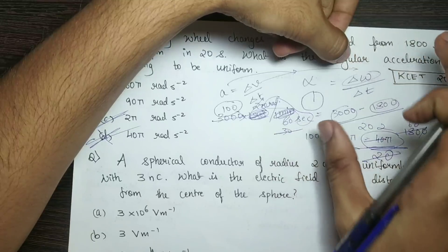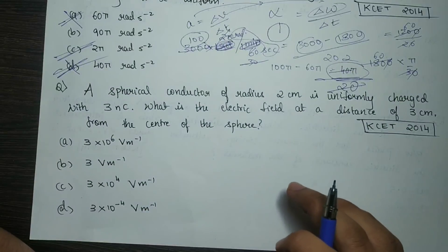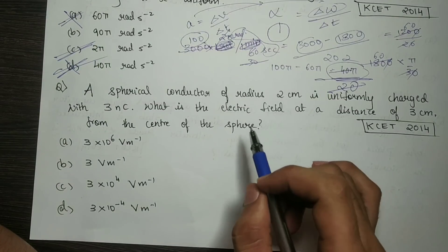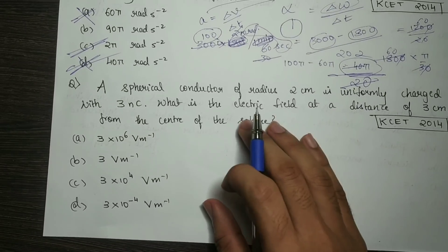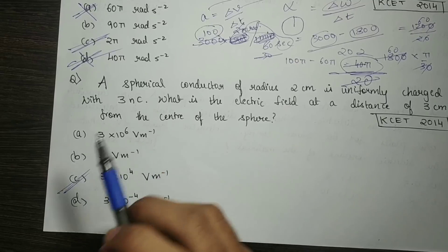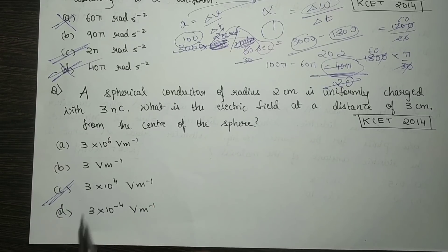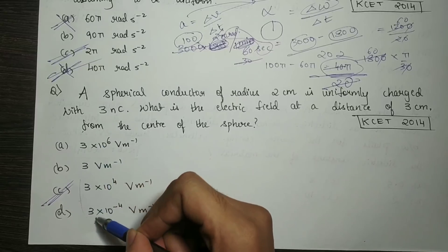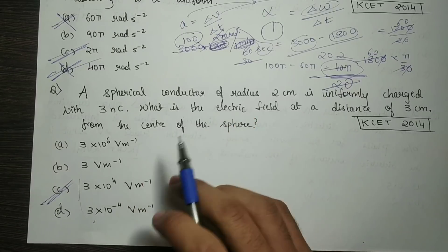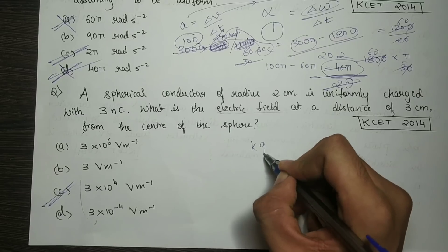Next question: a spherical conductor of radius 2 cm is uniformly charged with 3 nanocoulombs. What is the electric field at a distance of 3 cm from the center of the sphere? To find the electric field, we use the formula E = kq / r².